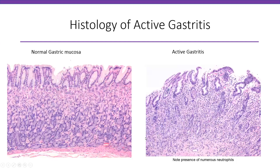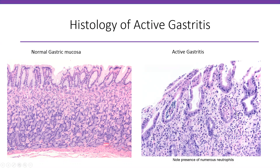Let's look at the histology of active gastritis. This is normal gastric mucosa with gastric foveolar epithelium, epithelial cells, and the muscularis mucosa layer. When you have active gastritis, you can see numerous neutrophils damaging the surface — the surface does not look healthy, there is not much mucin left, and there is a lot of inflammation. In the higher power picture you can see neutrophils in the pits and in the lamina propria between the epithelium.